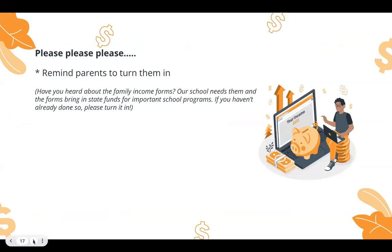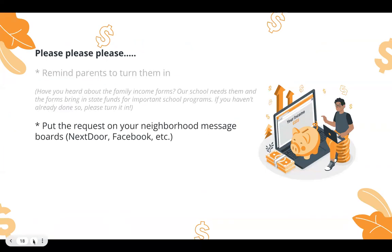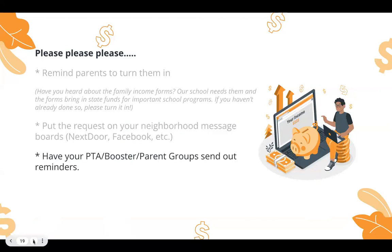Here are some things that you can do. Remind other parents to turn the forms in. Here's a really simple thing you can say: 'Hey, have you heard about the family income form? Our school needs them — it brings in state money for important school programs. If you haven't done so, please turn it in.' Sometimes you all have the best impact on other parents. Put it on neighborhood message boards, Nextdoor, Facebook. If you've got a PTA or a parent booster group, just send out the reminders.